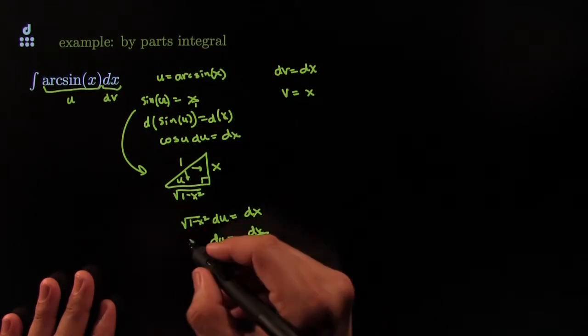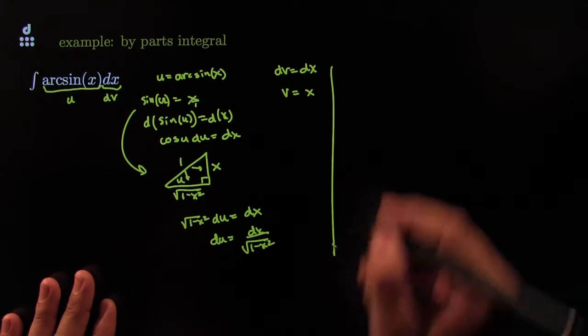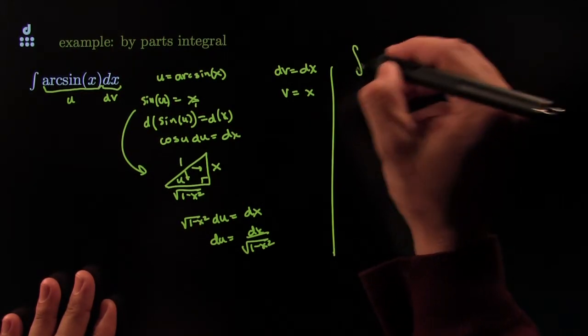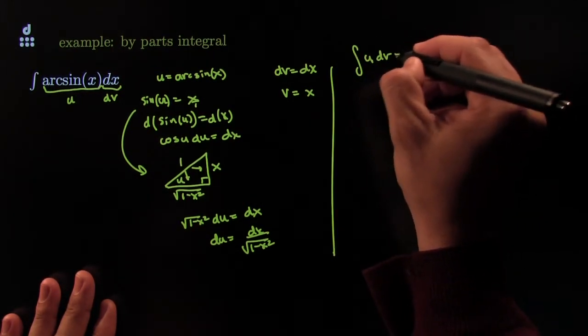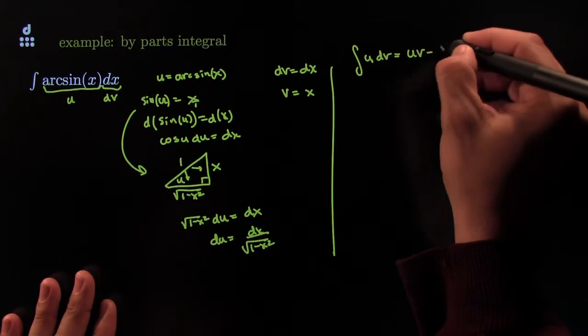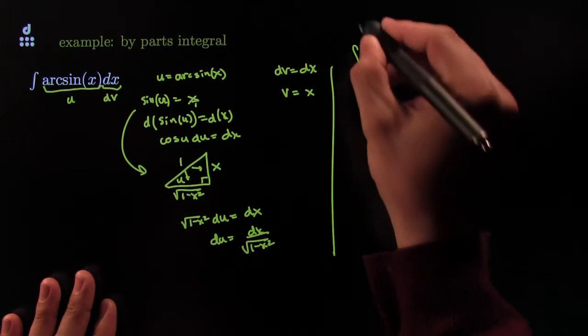All right, that tells me what the du is and that tells me what the dv is. Together, these two things go like this. We say that the integral of u dv is equal to u times v minus integral of v du. That's the by-parts formula.